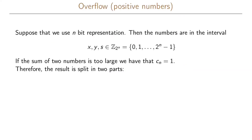A situation we need to handle is overflow. Suppose we use an n-bit representation, so our numbers x, y, and s belong to Z_{2^n}, meaning values from 0 up to 2^n − 1. If the sum is too large, the final carry bit cn equals 1. We therefore split the result into two parts: the sum s, which is the remainder when dividing x+y by 2^n...